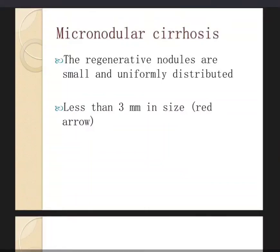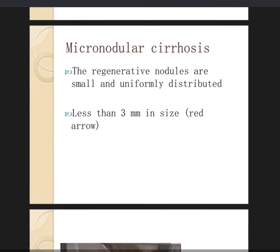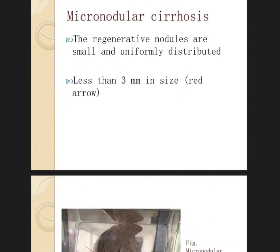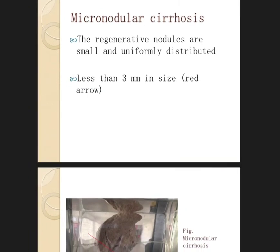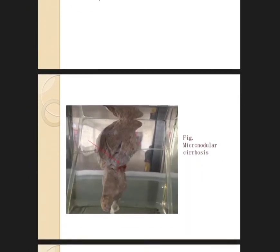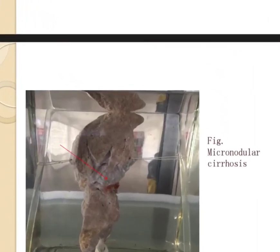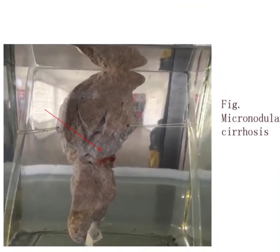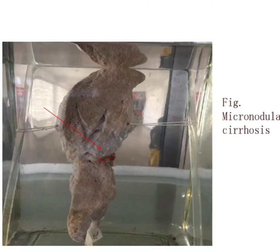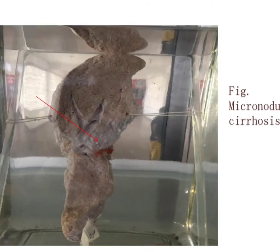Let's learn about the gross pathology of micronodular cirrhosis. The regenerative nodules are small and uniformly distributed, and these are less than 3 mm in size.